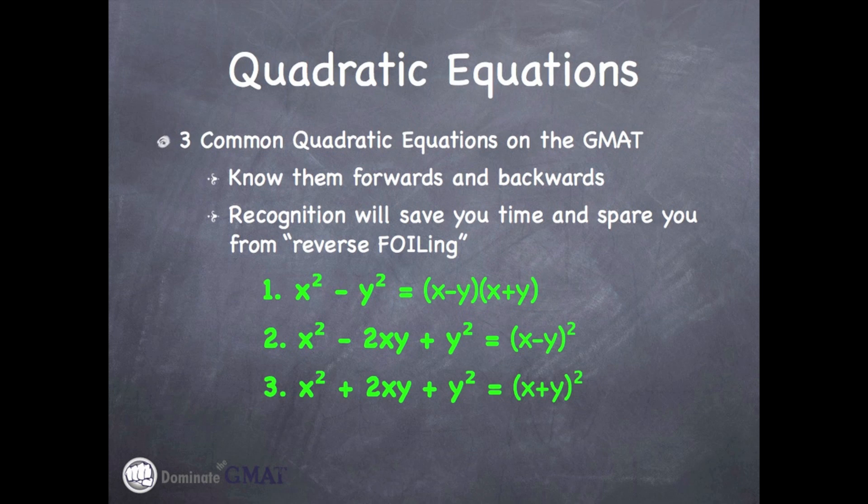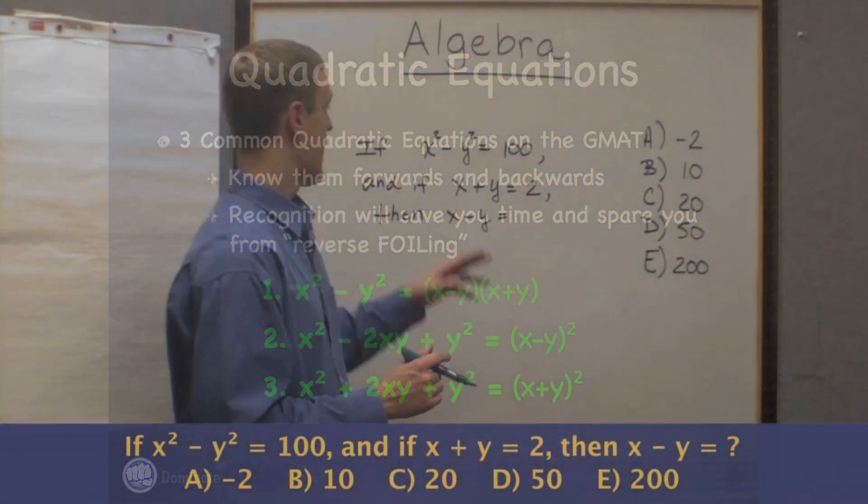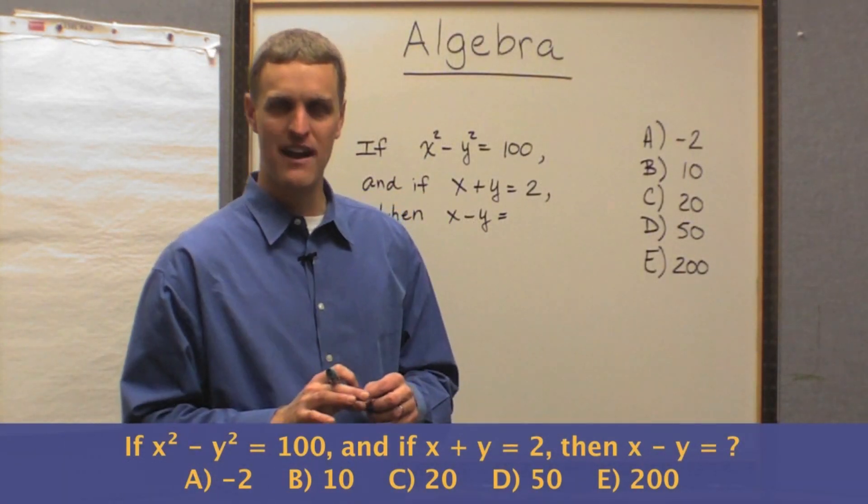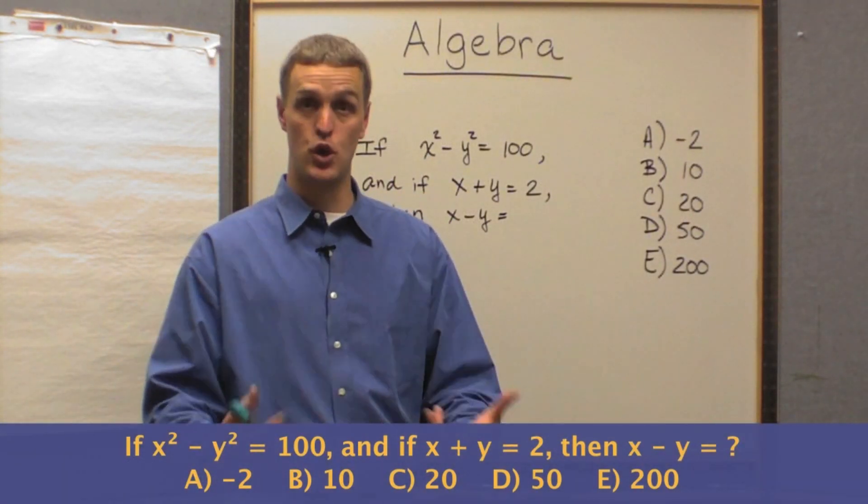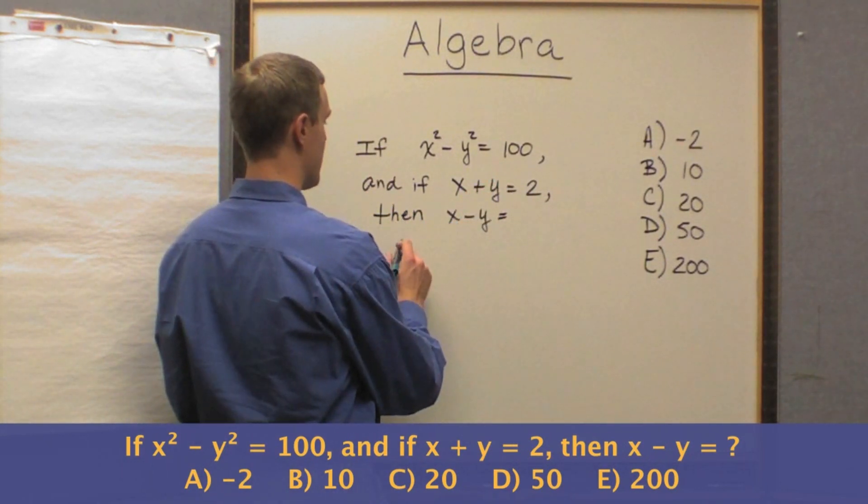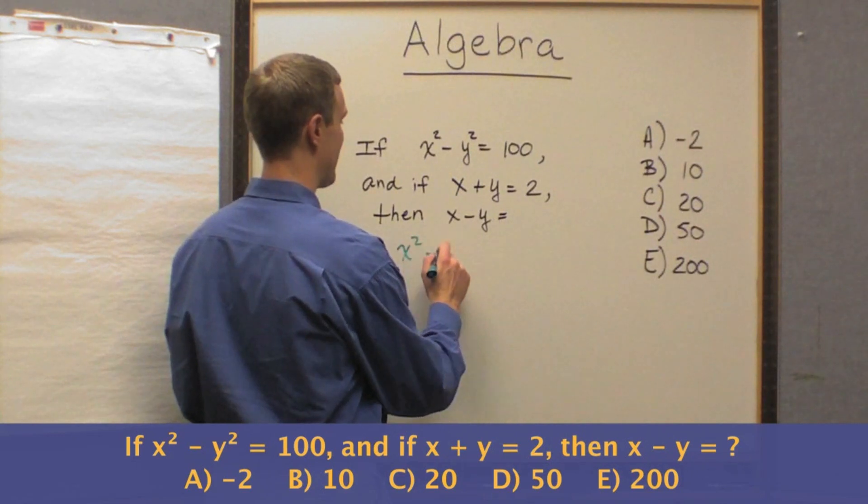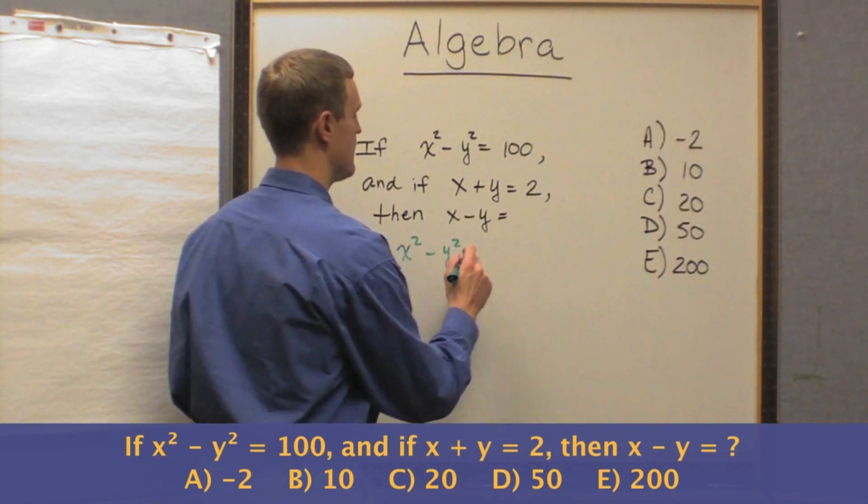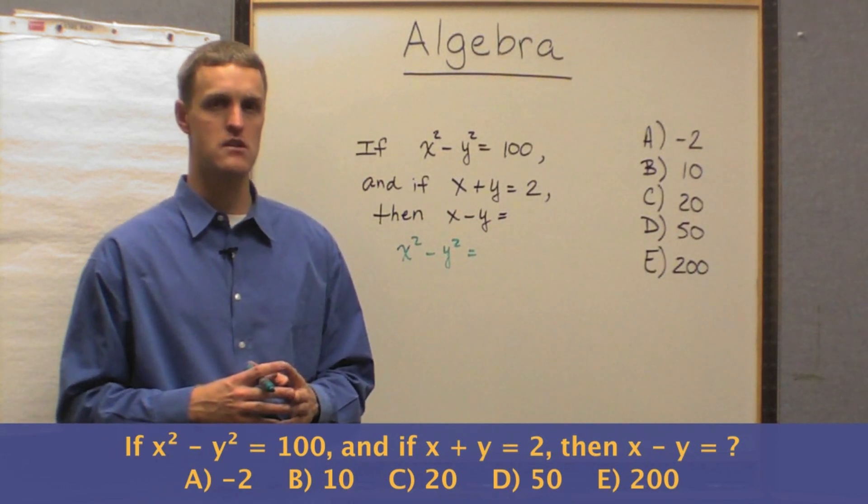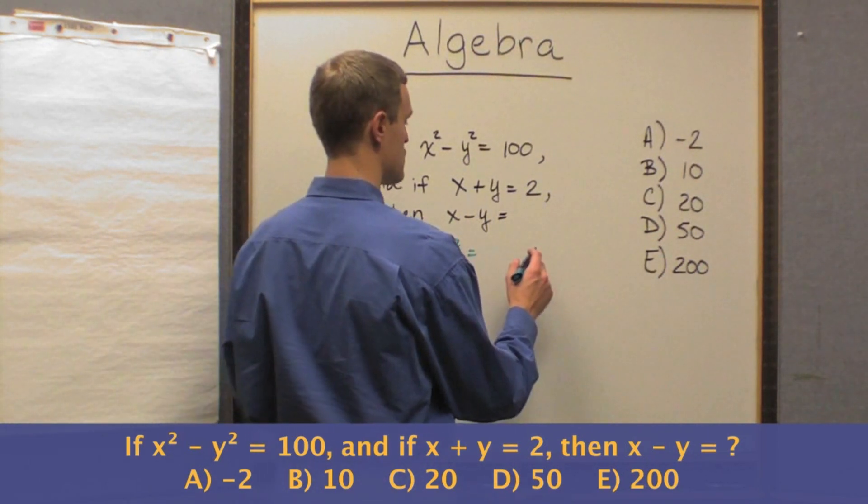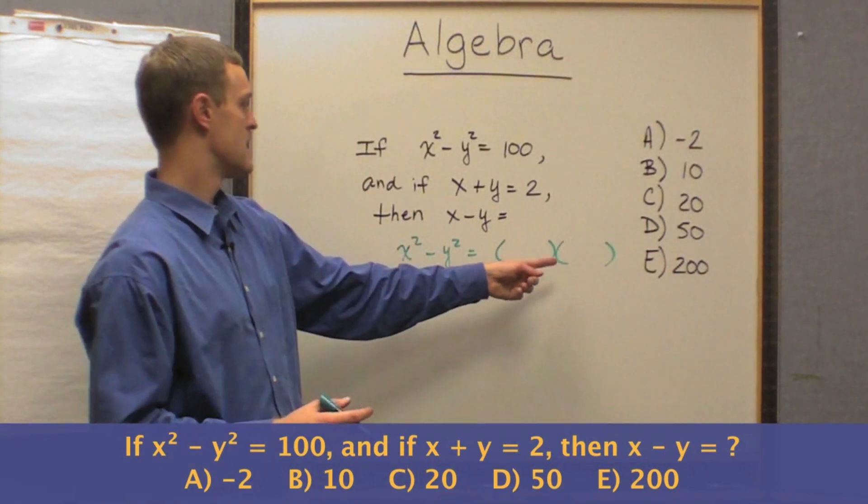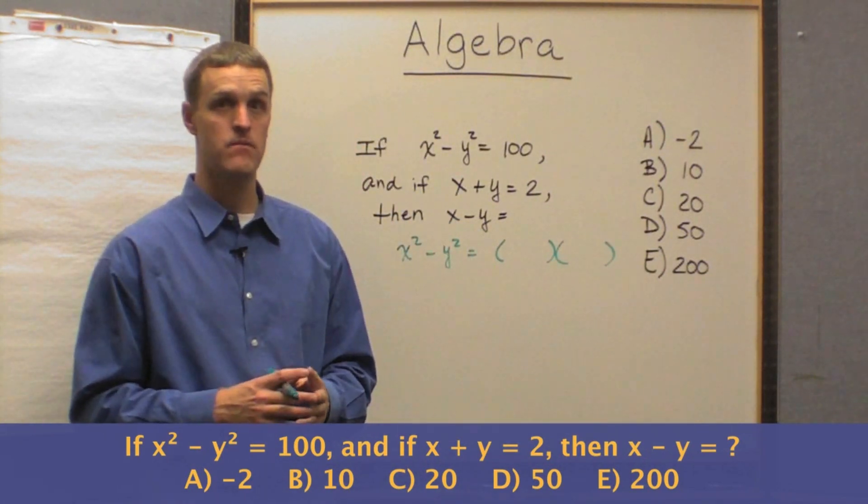Well, we recognize that as that first common quadratic equation. And that first common quadratic equation, again, driving through the fog with headlights on, you should do something. You could do something, even if you don't see how the whole question is going to unfold. We know that x squared minus y squared is one of those common quadratic equations, one of those three common quadratic equations, the roots of which are what? What, when multiplied together, is going to produce that?